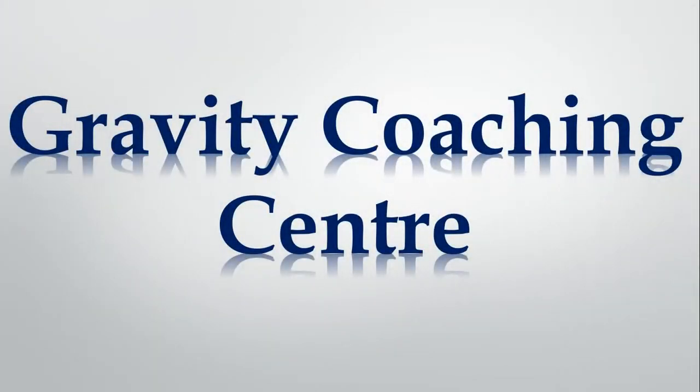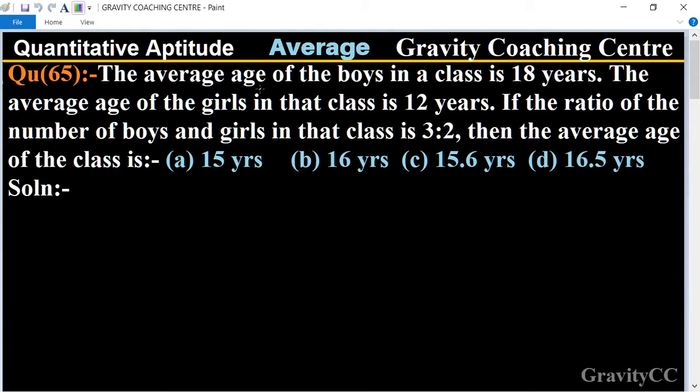Welcome to our channel, Gravity Coaching Center. Quantitative Aptitude, chapter Average, question number 65. The average age of the boys in a class is 18 years and the average age of the girls in that class is 12 years. If the ratio of the number of boys and girls in the class is 3 to 2, then the average age of the class is what?